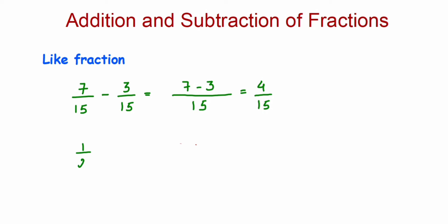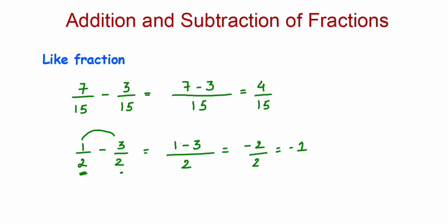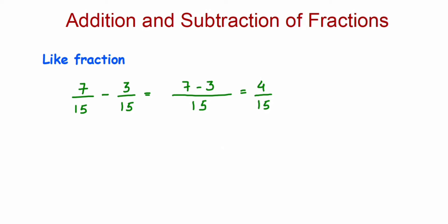Suppose we have 1/2 minus 3/2. Denominators are the same, so this equals 1 minus 3 over 2, which is minus 2/2. You can cancel this to get minus 1. Note: I just took a random example here — normally fractions will not be negative. Rational numbers can be negative, but I just took a random number, which is why I got a negative sign.